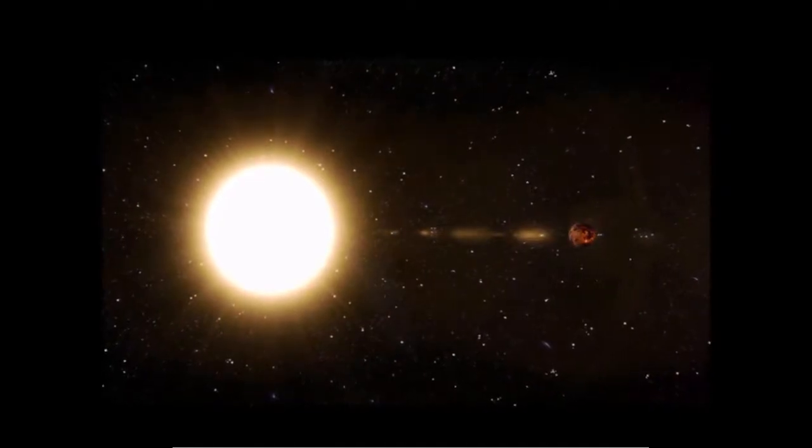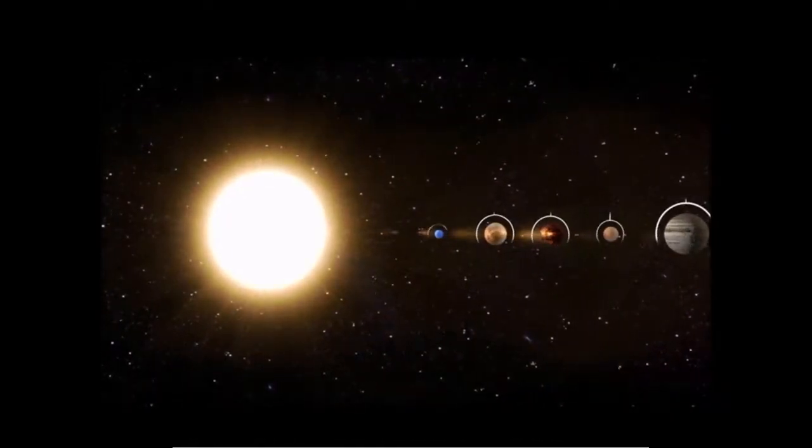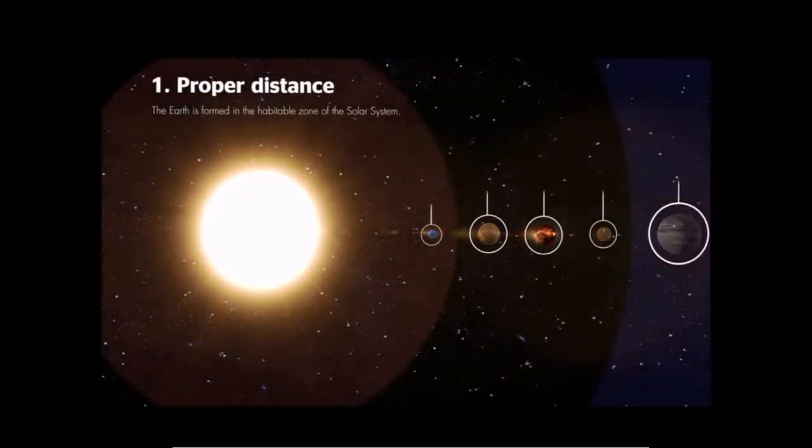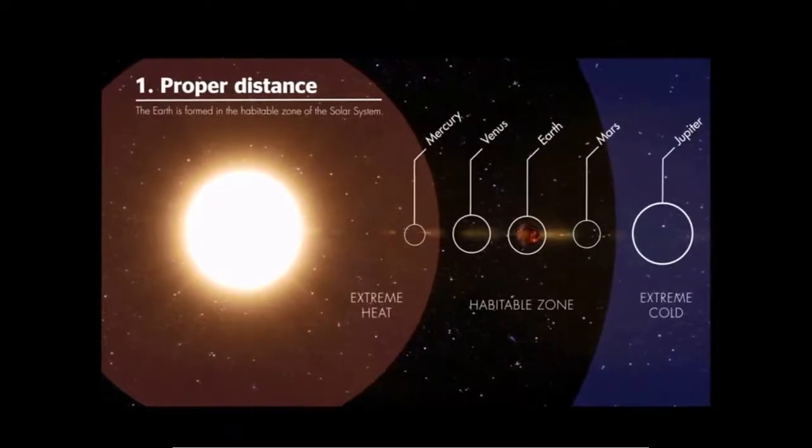In fact, the orbital position of the Earth and the distance from the Sun is the ideal for the planet to support life. It is also called the habitable zone.